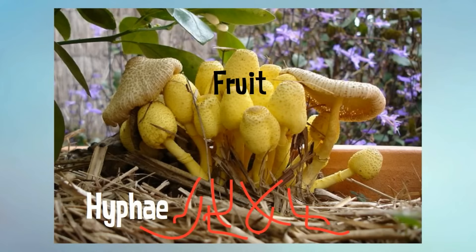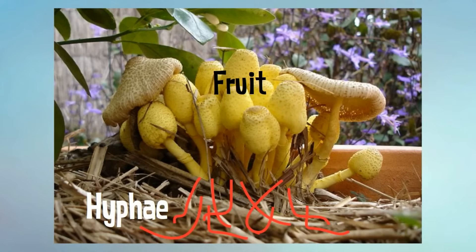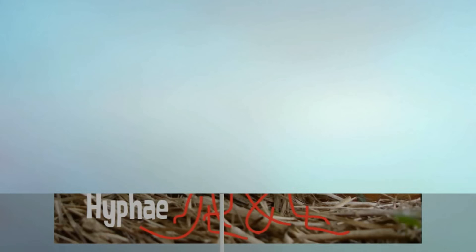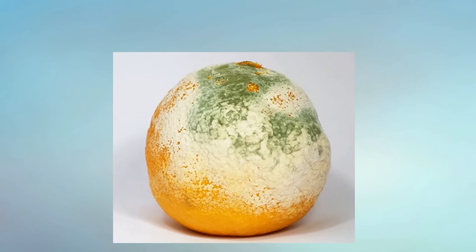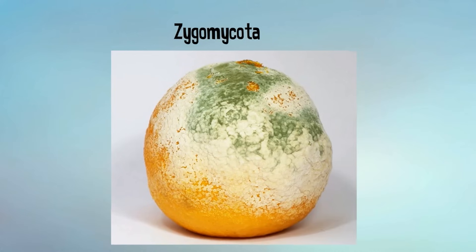Many fungi, like mushrooms, have a visible fruiting body, and a mass of hyphae is called a mycelium, which is most likely hidden from view. There are four main types of fungi. The first is zygomycota — many of these fungi are molds, and they produce spores on the tips of their hyphae. A common example is bread mold.